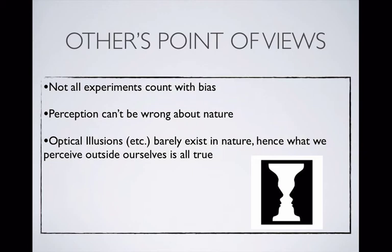For example, as we can see in this slide, the picture of the vase or the two faces was man-created. The example we saw in class of the colors in the squares was also man-made. So if we're studying the natural sciences, how can our perceptions be wrong if there are no illusions made by nature that we know of? This could be used as a counterclaim to my claim.